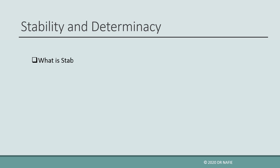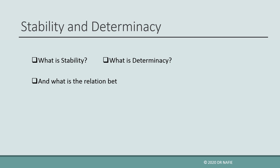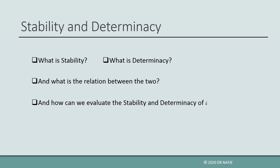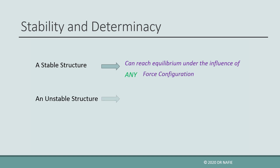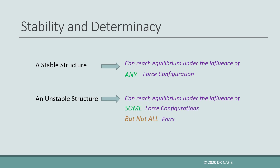Today we will talk about stability and determinacy. We will explain what is stability, what is determinacy, and what is the relation between the two, and how we can evaluate the stability and determinacy of a structure. Stability is related to the ability of a structure to reach equilibrium. If a structure can reach equilibrium for any possible force configuration imposed on it, then the structure is stable. If there exists a group of forces which when imposed on the structure equilibrium can't be reached, then the structure is unstable.